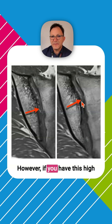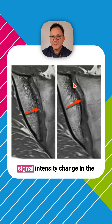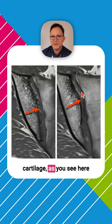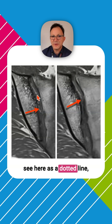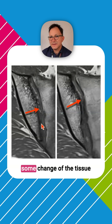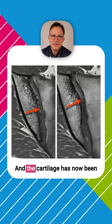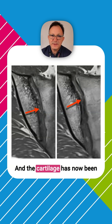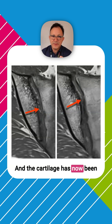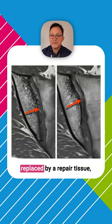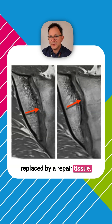However, if you have this high signal intensity change in the cartilage — as you see here as one line and as you see here as a dotted line — then you know there is some change of the tissue within the joint space. And the cartilage has now been replaced by a repair tissue.